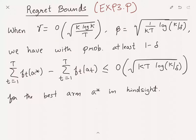Then we have with probability at least 1 minus delta, the true regret, which is sum t equals 1 to T of ft of a star minus sum t equals 1 to T of ft of at, is at most order square root kt log k over delta. Here we get the optimal dependence on the time horizon. This is what EXP3.P gets.